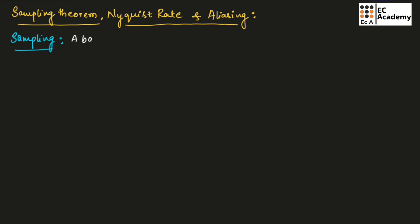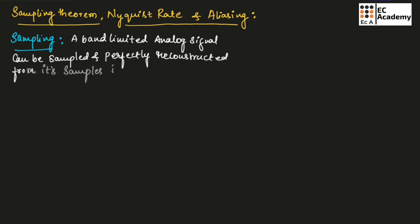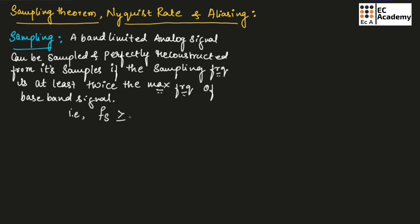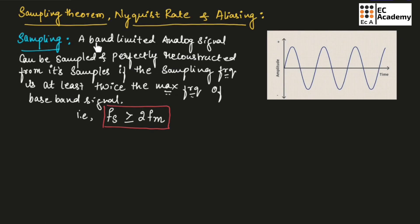A band-limited analog signal can be sampled and perfectly reconstructed from its samples if the sampling frequency is at least twice the maximum frequency of the baseband signal, that is Fs should be greater than or equal to 2Fm. If the maximum frequency of the baseband signal is Fm, then the sampling frequency should be greater than or equal to 2Fm.